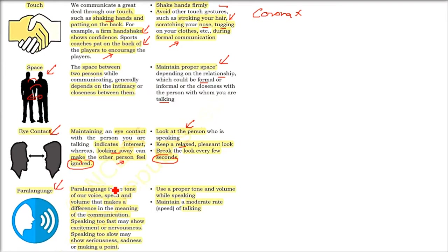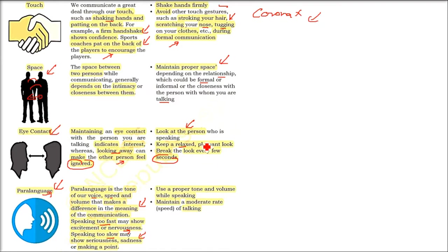Paralanguage means your voice, tone, pitch, and volume. It makes a profound difference in the meaning of communication. Raising your speed or volume is sometimes required but not always. Speaking too fast means you are overexcited or nervous; speaking too slow can mean you are serious or sad. You have to use a proper tone, pitch, and volume while speaking, and maintain a moderate rate — not very fast, not very slow.